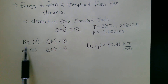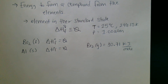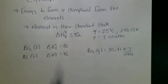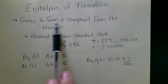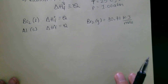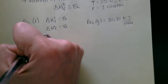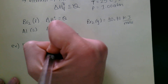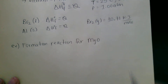To be in the standard state, the element has to be in its correct state that you would expect to find it at 25 degrees Celsius and one atmosphere. So let's look at writing enthalpy of formation reactions — we write those reactions forming compounds from their elements. For example, let's write the formation reaction for magnesium oxide.